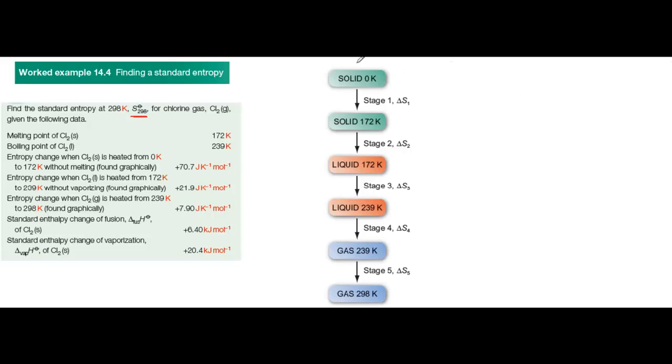The key is to draw a diagram like this one, which shows all the stages involving entropy changes. Then you work out the entropy change for each stage, and there are two kinds of entropy change.